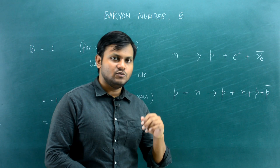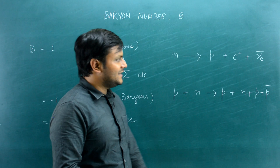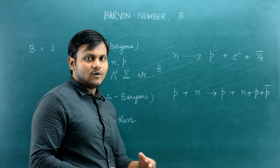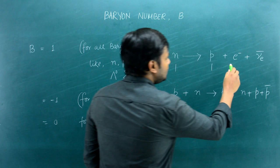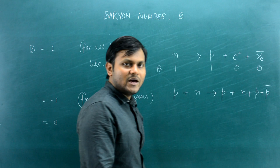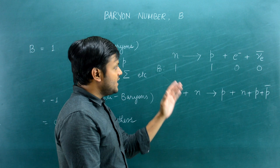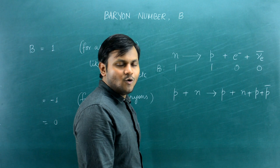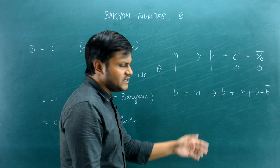Let's look at the beta decay interaction: a neutron becomes a proton, emitting an electron and an electron anti-neutrino. Looking at the baryon number: neutron = +1, proton = +1, electron = 0, electron anti-neutrino = 0. Left-hand side: 1; right-hand side: 1. The baryon number is conserved. If there is a baryon on the left-hand side, there must be a baryon on the right-hand side.